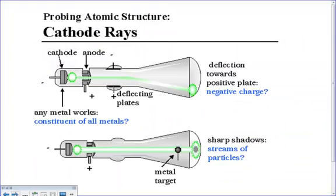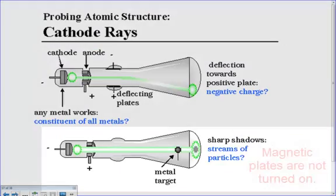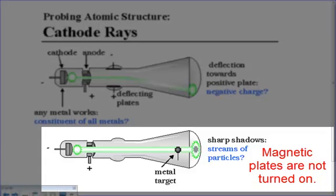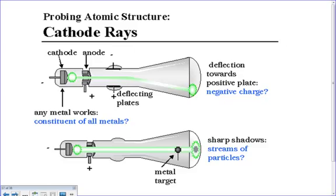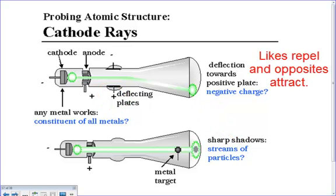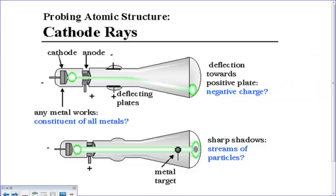Thompson, when he did this test, typically if the plates were not on, the beam should go straight through and hit the back wall right in the middle. But when the deflecting plates were turned on, he noticed that the beam was attracted to the positive plate. Since opposites attract, the beam must be made of negative particles, since it was attracted to the positive plate.